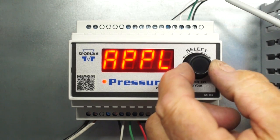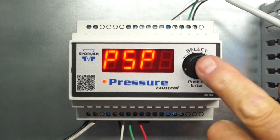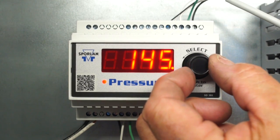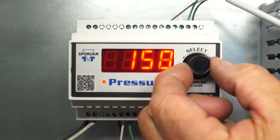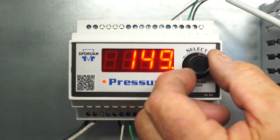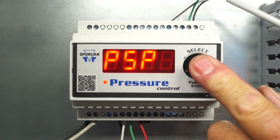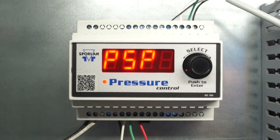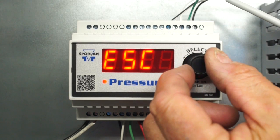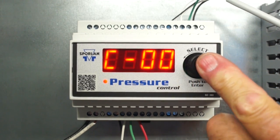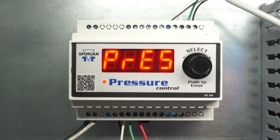To view a parameter, rotate the select knob to the desired parameter and press the knob. The default value will be displayed. Turn the select knob to change the value and then press the select knob to enter the value and return to the set point menu. After all the desired parameters are set, turn the select knob to ESC and press the knob to save and implement all changes.